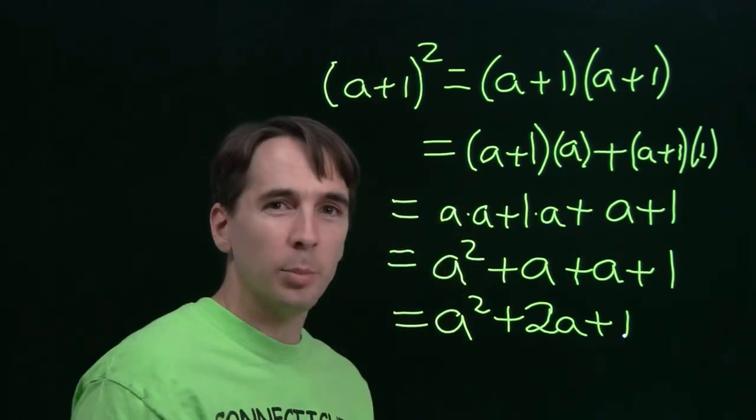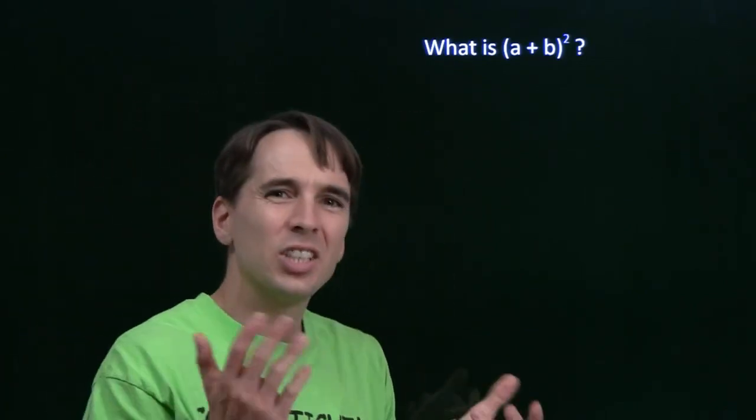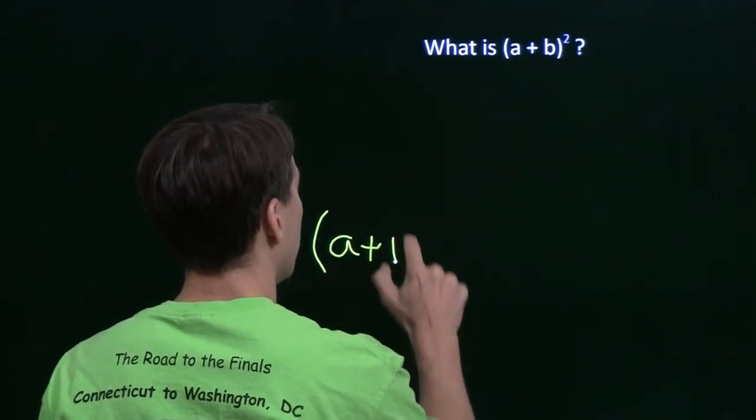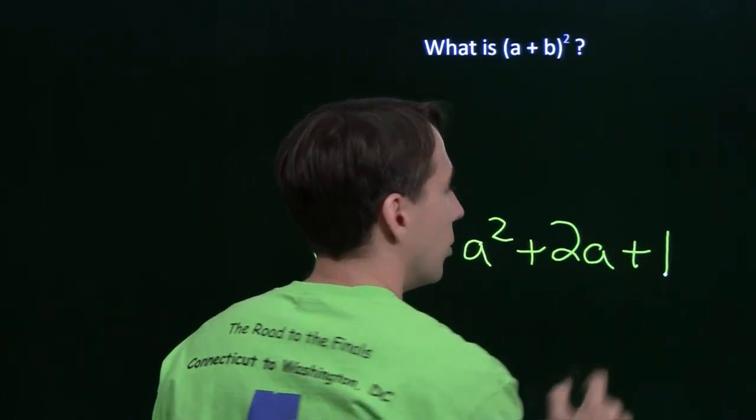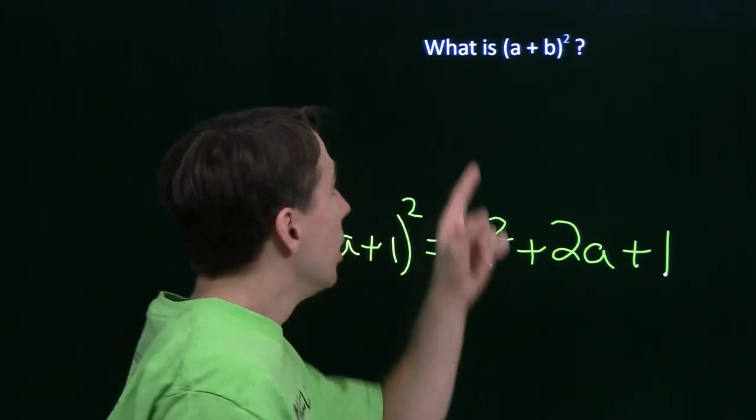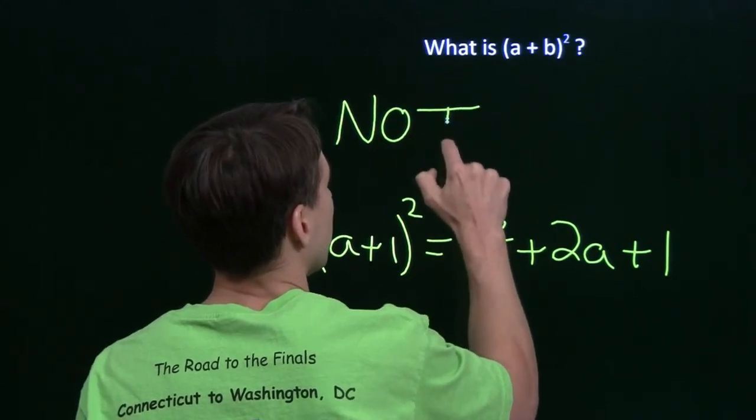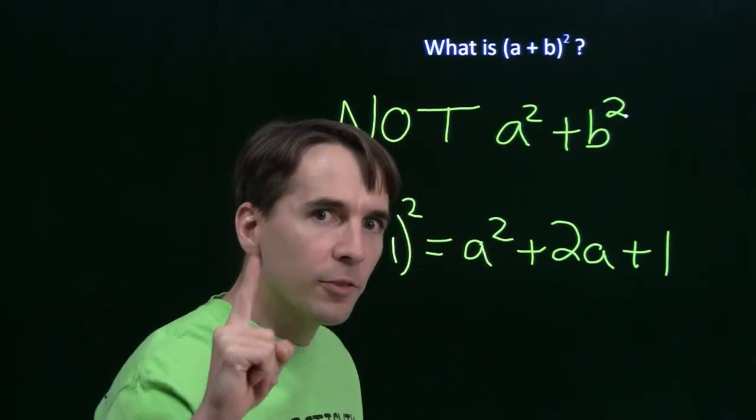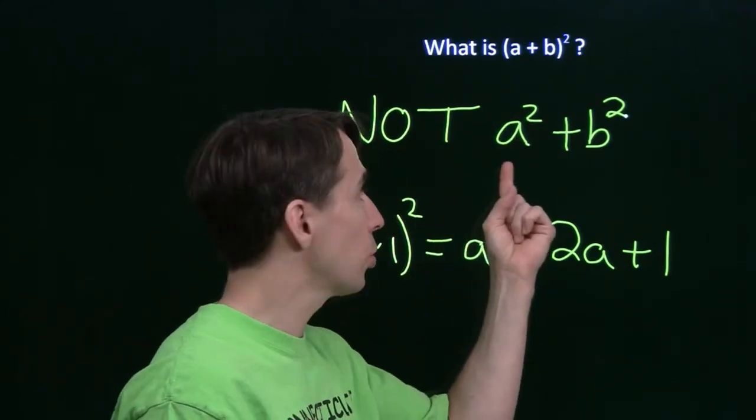All right, so now we know how to square a plus 1, I'm going to leave you with a little homework problem here. Here's your homework problem. What is the square of a plus b? Now, we just saw that a plus 1 squared is a squared plus 2a plus 1. So we see that the square of a plus 1 is not just a squared plus 1, we've got this extra thing here, 2a. Okay, so we know right away, at least I hope we know, that the answer is not a squared plus b squared. All right, and once again, if you learn only one thing from this video, it's that the square of a sum of a and b is not the sum of the squares of a and b.